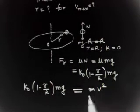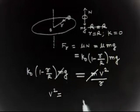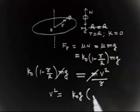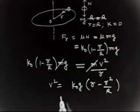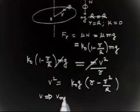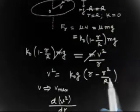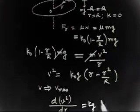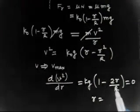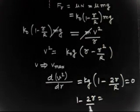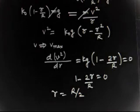Setting the frictional force equal to the centripetal force: k₀(1 - r/R)·mg = mv²/r. Solving for v², we get v² = k₀g(r - r²/R). To maximize velocity, v² must also be maximum. Differentiating dv²/dr = k₀g(1 - 2r/R) = 0, which gives r = R/2.